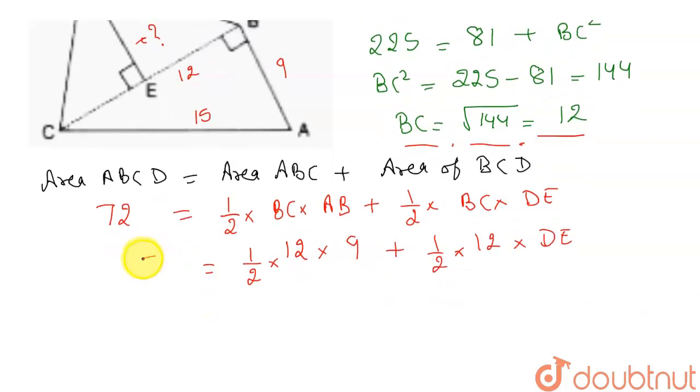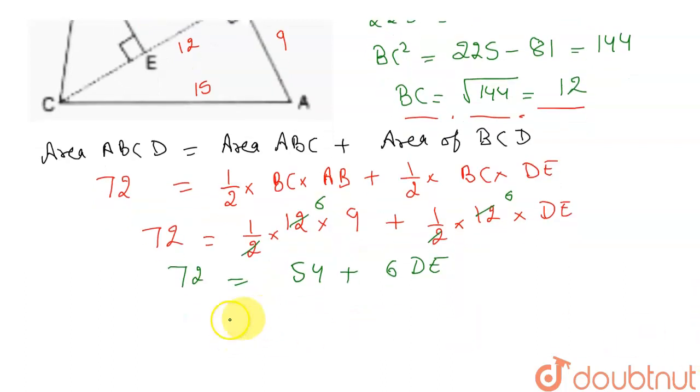So this will be equal to: this 2 can cancel out by the 6, 6 into 9 will be 54, plus this 2 can cancel out by this 6, so this will become 6 DE. And this is equal to 72. Now I can write this as 72 minus 54 will be equal to 6 times DE.